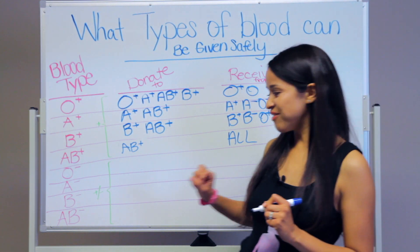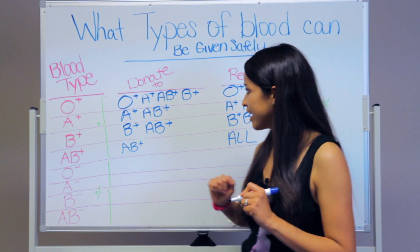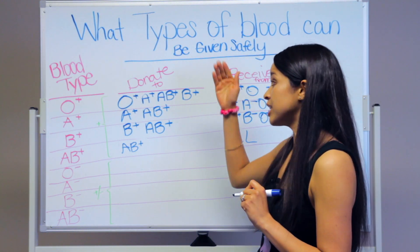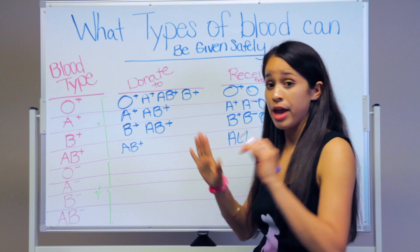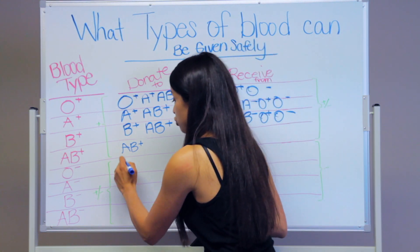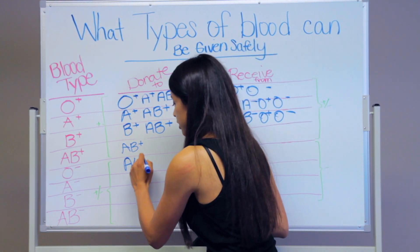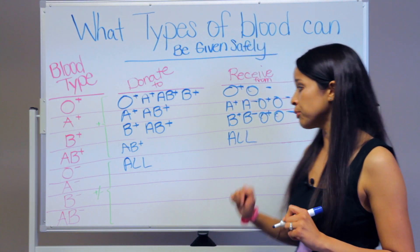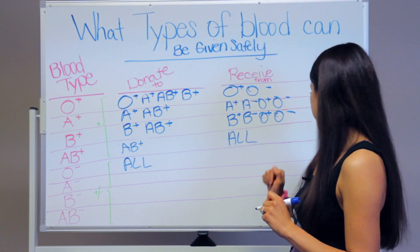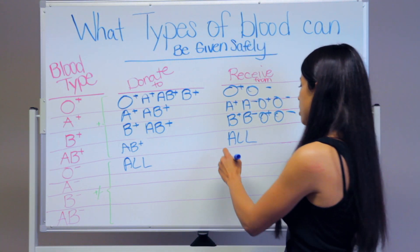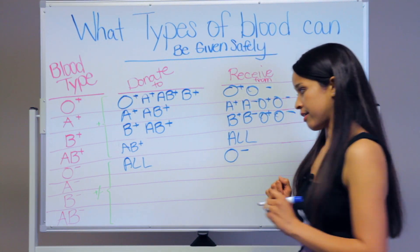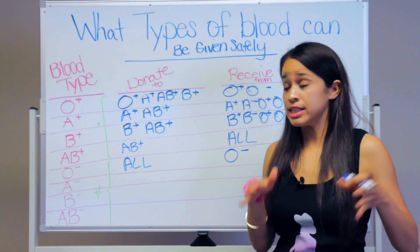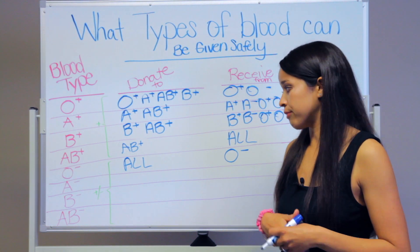O negative can donate to everyone — they are the universal donor. However, O negative can only receive blood from O negative, because on the negative side they can only receive negative blood, and O negative is the only option.